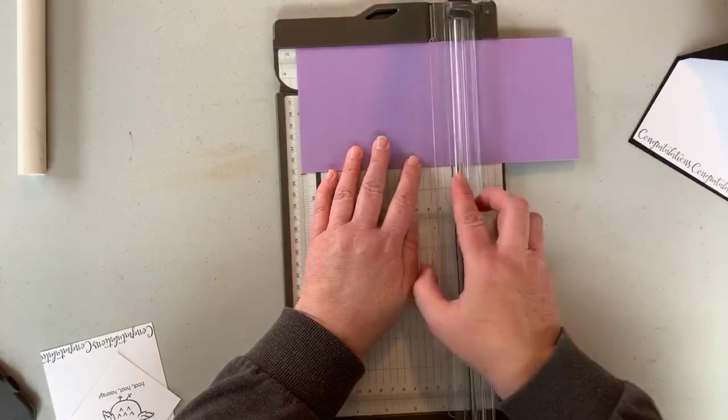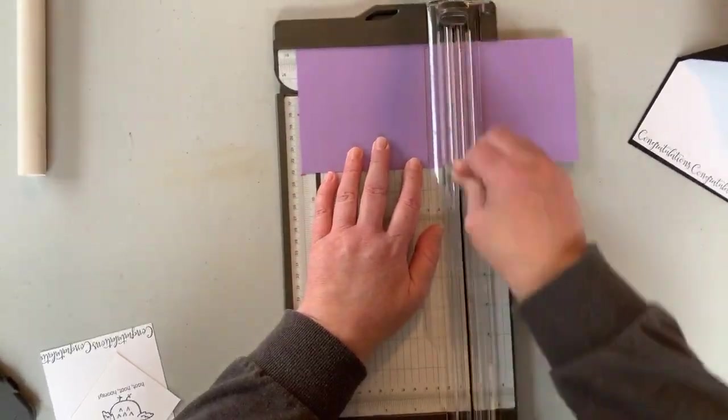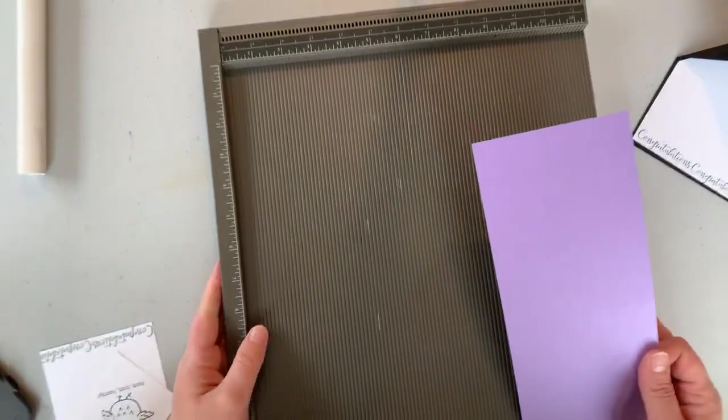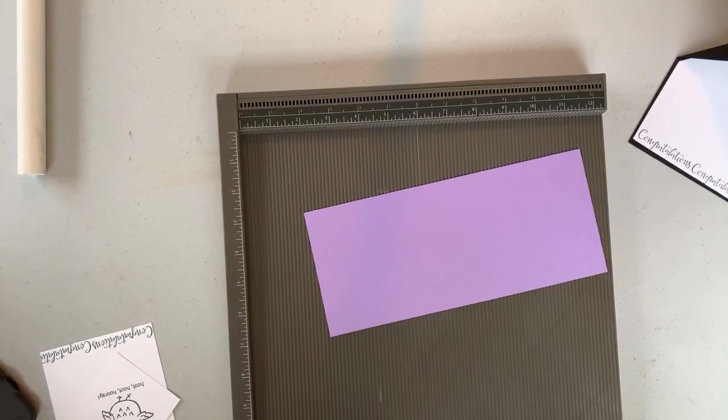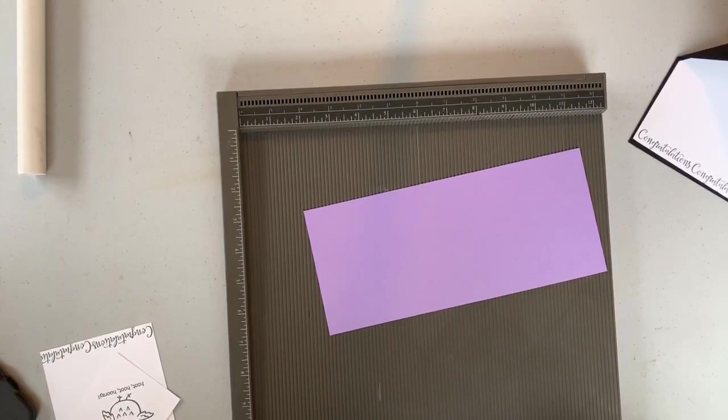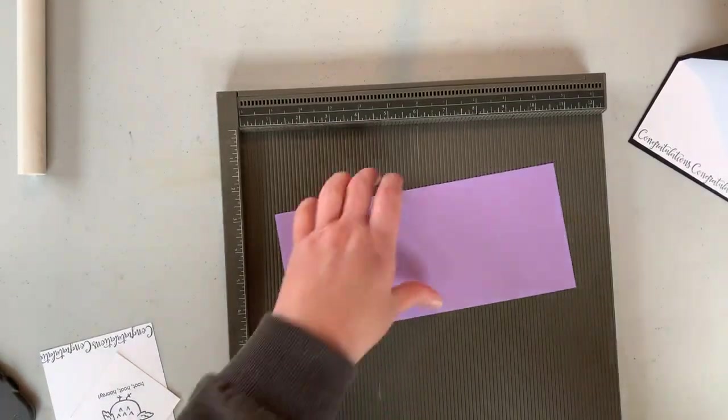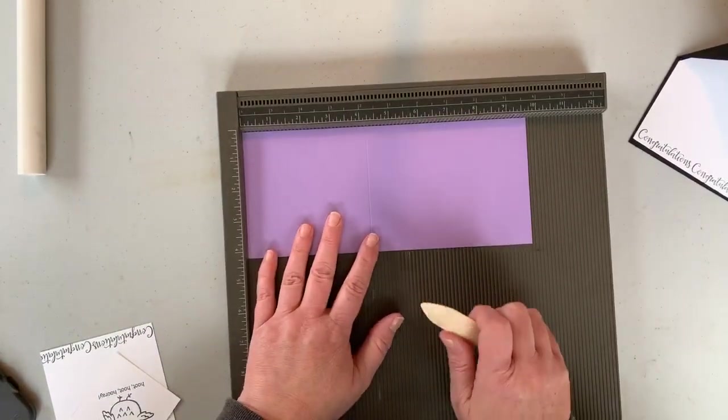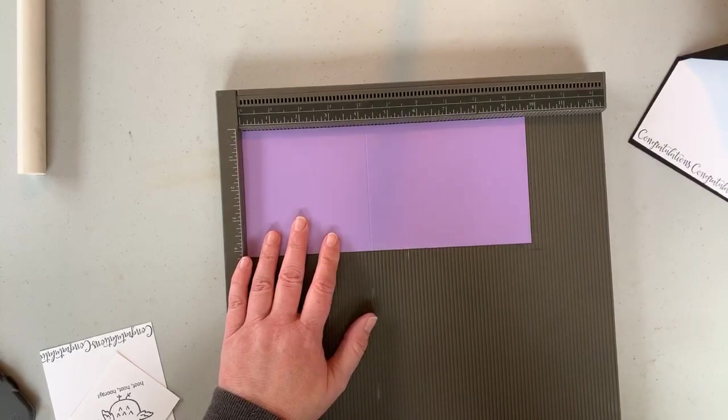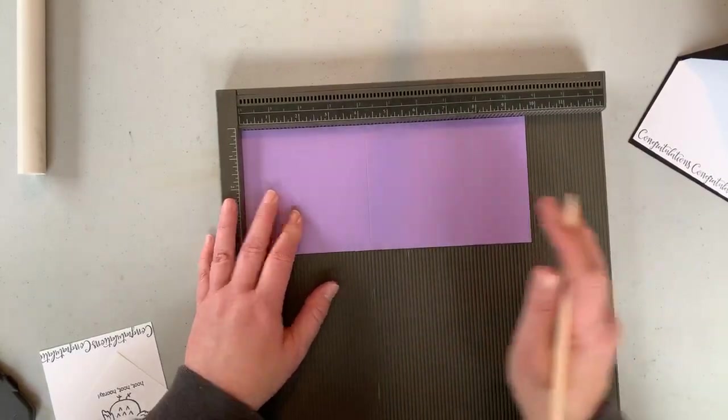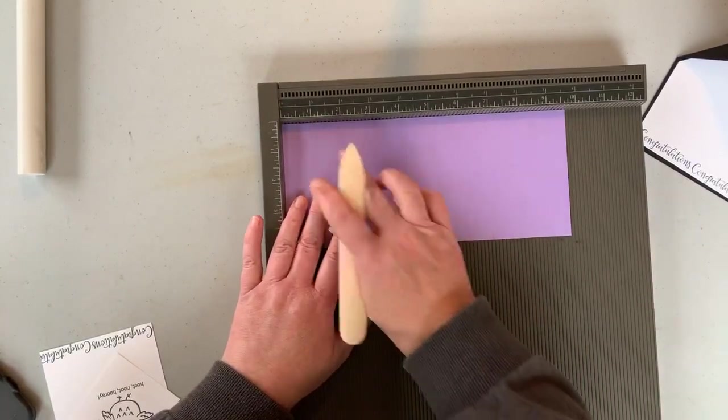Now that I have this cut to the proper length, this is four and a quarter by nine and three quarters. We're going to do a little combination of scoring. We're going to score this at five and a half, and we're going to do a little combination of scoreboard and the trimmer. And I realized that the trimmer has a scoring tool on it, but I will tell you that I did this a couple times and I just couldn't get it right. So what I'm going to use is my scoreboard.